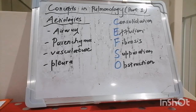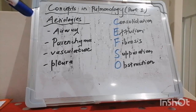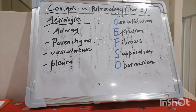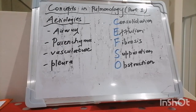So you may ask, what affects the airway? Well, notorious examples are COPD, asthma, bronchiectasis, foreign body aspiration, bronchiolitis, or obliterative pneumonia like in rheumatoid arthritis, and so forth.